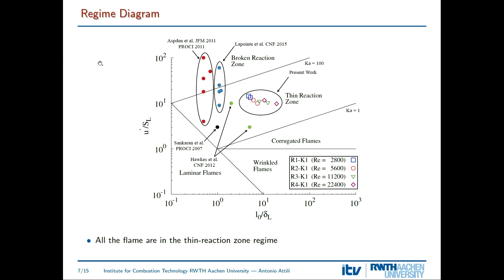Our simulations end up in the so-called thin reaction zone regime for premix flames. In this regime, the reaction zone thickness is not significantly affected by turbulence, so the flame structure is close to a laminar one in the heat release region. However, on the other side where heat release is negligible and the flow is diffusion-dominated, there is a strong effect of turbulent transport. This is a complicated regime to model and also the one typically encountered in real applications.